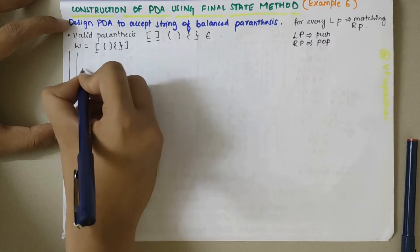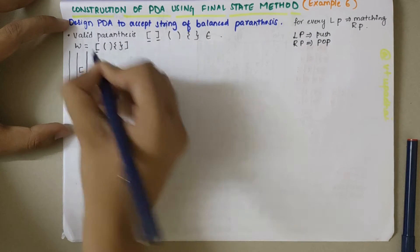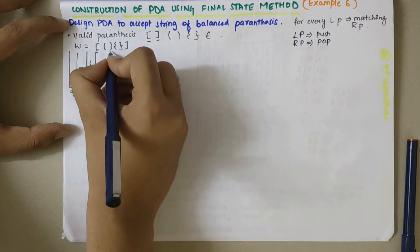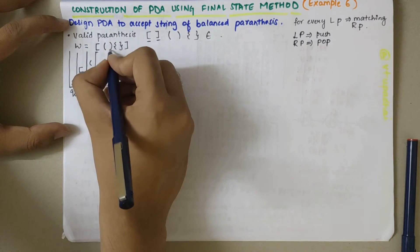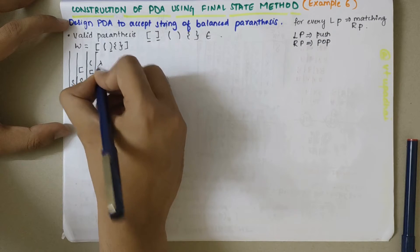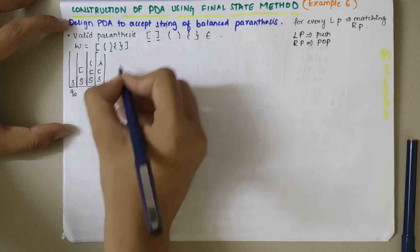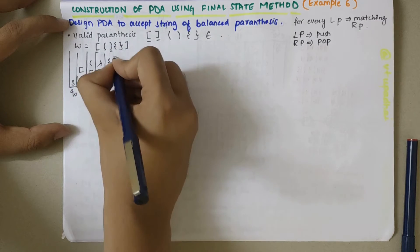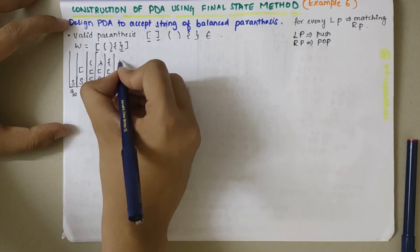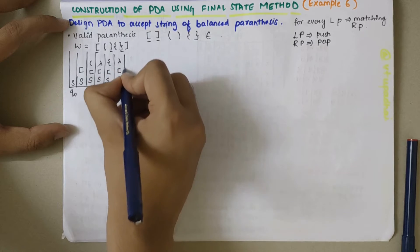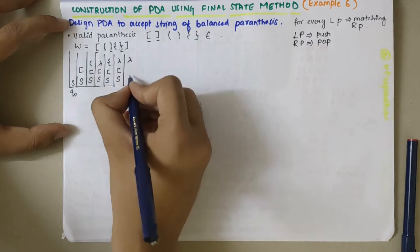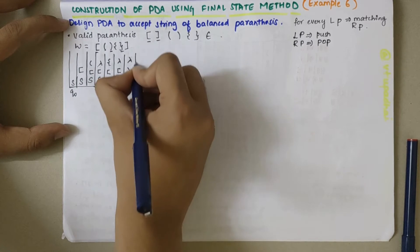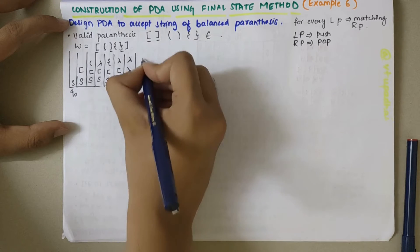A square bracket is encountered first, so I push it. Next, an open bracket is encountered — stack now has square bracket and open bracket. Then a closed bracket is encountered, so the open bracket is replaced by lambda. Next I have curly brackets, so they are pushed. Then matching closed brackets pop them, replacing with lambda, until only the square bracket and S remain.